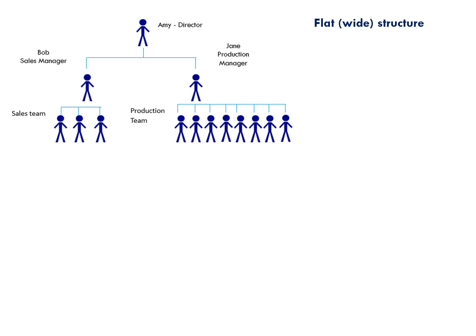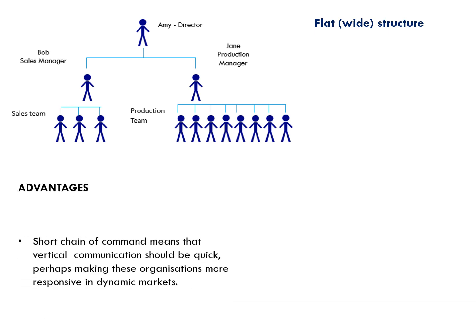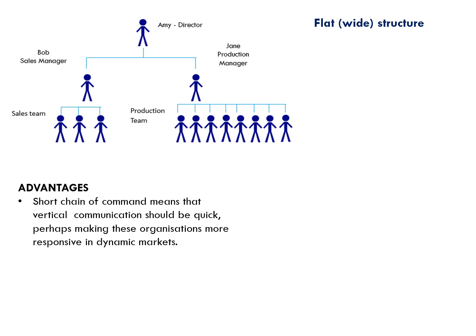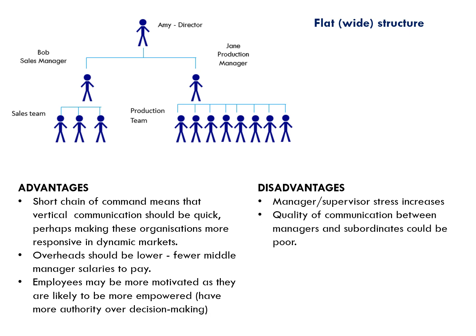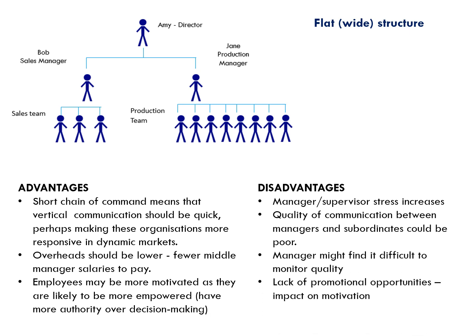Now let's look at the flat or wide structure. Advantages: a short chain of command means vertical communication should be quick, making the business more responsive in dynamic markets. Overheads should be lower with fewer managers' salaries to pay. Employees may be more motivated as they are empowered with more authority over decision making, since one manager can't possibly make decisions for all eight or nine people beneath them. Disadvantages: it may be difficult for managers to be effective, increasing their stress. Quality of communication could be poor with so many people to communicate to, and it's difficult to monitor quality. There's also a lack of promotional opportunities which may impact motivation.